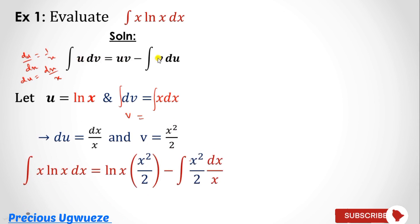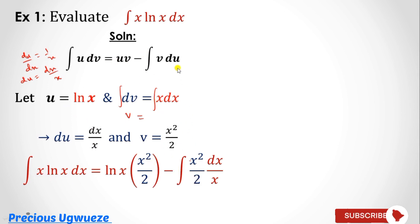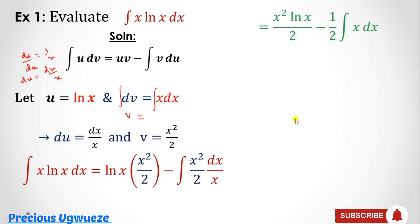Now substitute into the formula. This integral of u dv becomes: u = ln(x), v = x²/2, and du = dx/x. So substituting: ln(x)·(x²/2) minus the integral of (x²/2)·(dx/x). Now evaluate by multiplying out.